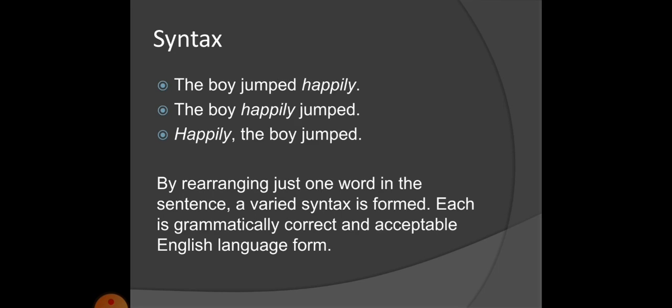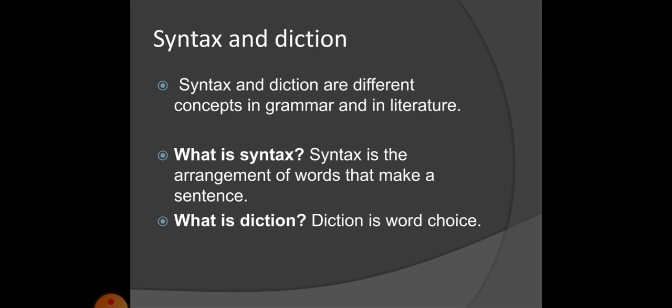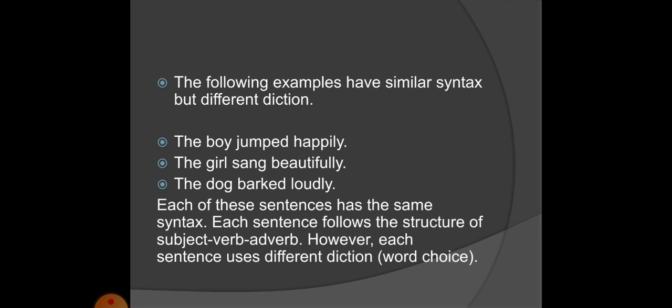In the three examples we have seen, the word arrangement changes: 'The boy jumped happily' and 'The boy happily jumped' — in those two, the syntactic pattern is changed. The arrangement of the words differs. Now, diction is basically the word choice — what words a writer or speaker chooses to convey their thinking or message.